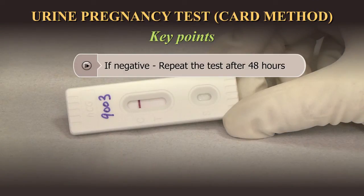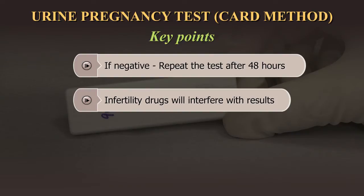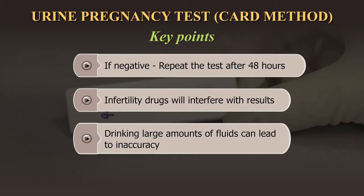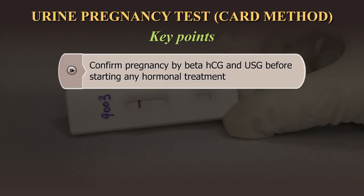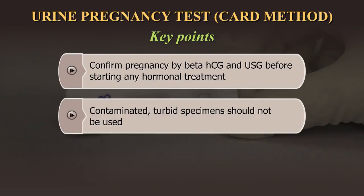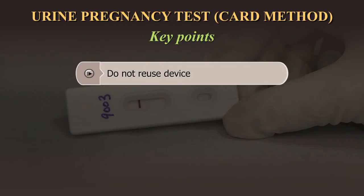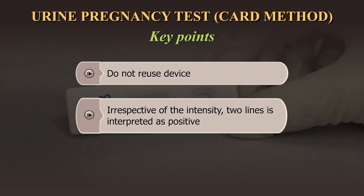If the test result is negative, it can happen that the period has been miscalculated — repeat the test. Infertility drugs containing HCG will interfere with the results of the test. Drinking large amounts of fluids prior to sample collection can dilute HCG hormone levels in the urine, leading to inaccuracy of the test results. Confirm pregnancy by other means before starting endocrinology or any other treatment. Contaminated or turbid specimens should not be used. Do not reuse a used test device. Irrespective of the intensity of the lines, two lines is to be interpreted as positive.